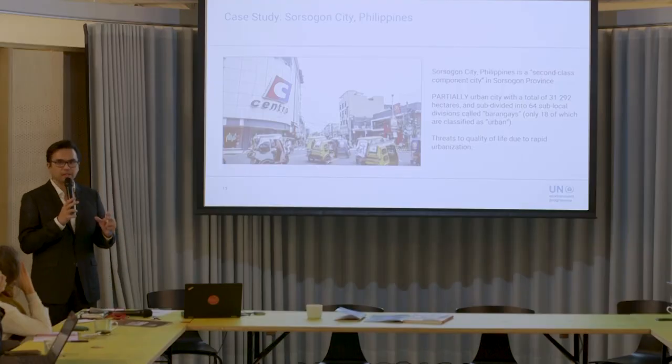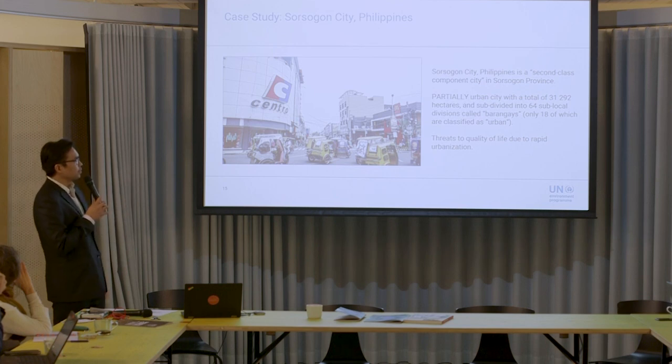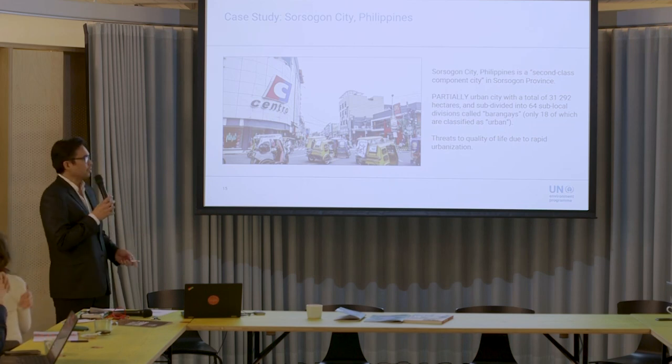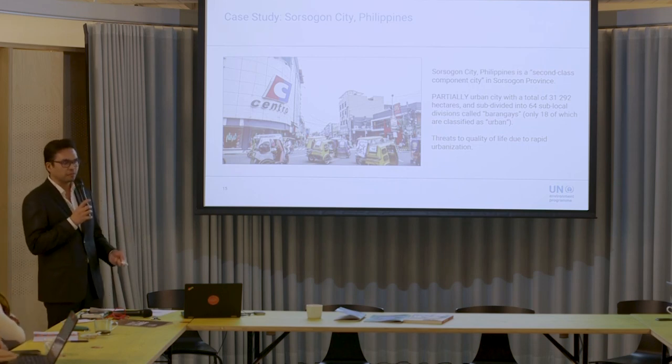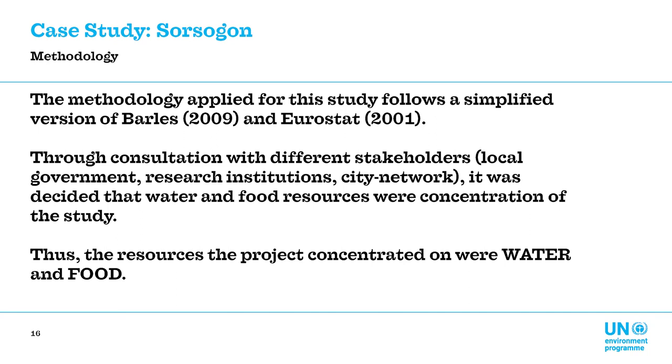Sorsogon is a partially urban city because a large chunk of it is actually farmland. In the Philippines, cities are subdivided into local divisions called barangays — like neighborhoods with a small elected government. Only 18 barangays are classified as urban and the rest as rural. Within the administrative boundaries of the city, a lot of farmland is included. One of the main challenges the city was trying to tackle is the threats to quality of life due to rapid urbanization.